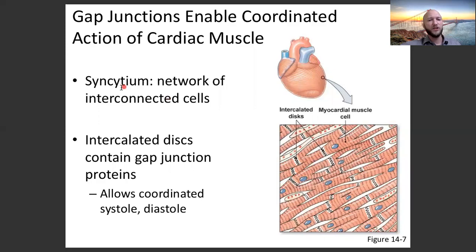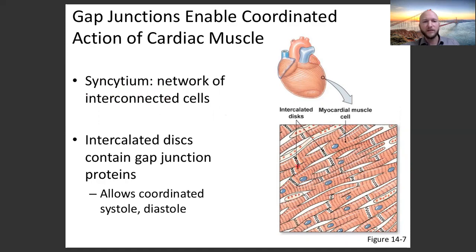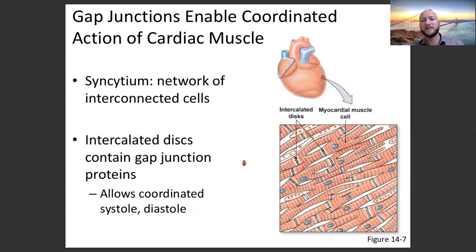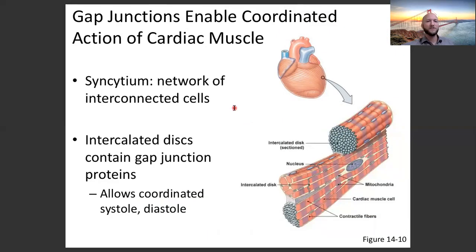Syncytium is a vocab word — it is a network of interconnected cells. Heart muscle cells have different branches and can connect with several other heart cells. The intercalated discs — represented by the squiggly lines — are where the gap junctions are. These intercalated discs between adjacent cardiac muscle cells have direct cytoplasmic connections which allow for coordinated systole contraction and coordinated diastole relaxation. It is not good when the coordination of heart muscle is thrown off.